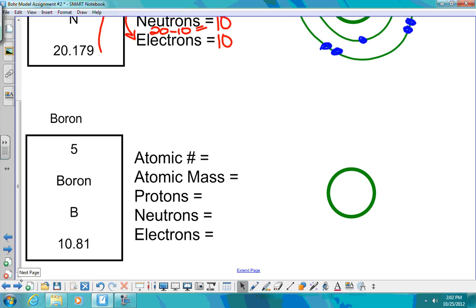Lastly is boron. Five is the atomic number. Eleven is my atomic mass. Five for number of protons. Six for neutrons. Five for electrons.